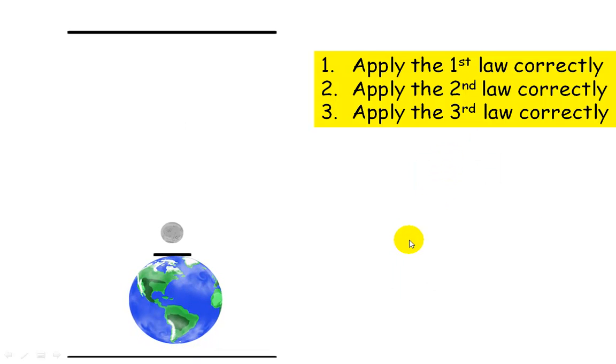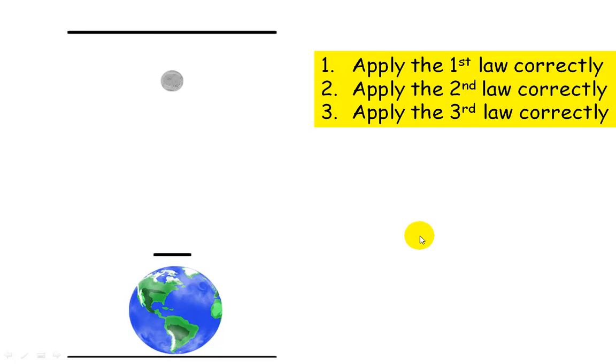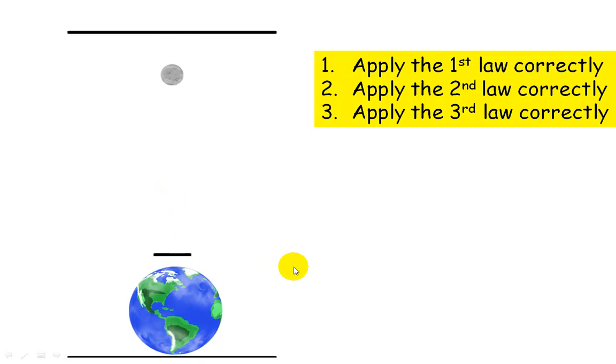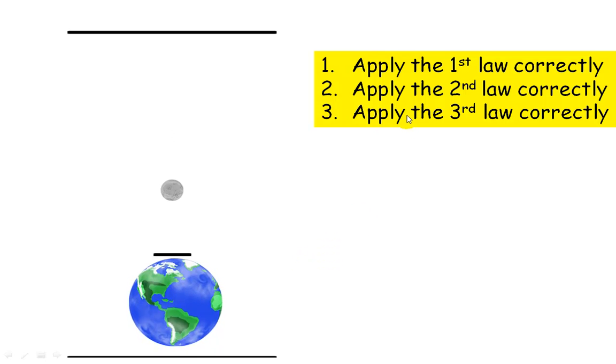The third law states that for every action there's an equal and opposite reaction. So the Moon is pulling on the Earth, and the Earth is pulling on the Moon with an equal and opposite force in an opposite direction. So that's the third law applied.